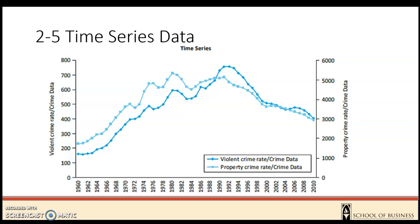Violent and property crime from 1960 to 2010. We can see how it tracks as we go. We have our violent crime axis over here, our property crime axis over here. And in our example we're actually going to be putting this together to see how it looks.